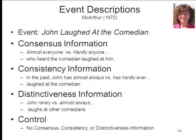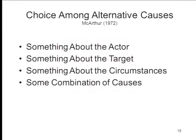This lecture is based on a doctoral dissertation by Leslie MacArthur, now Leslie Zebrowitz, who was the first to take Kelley's covariation calculus and actually test it empirically. Starting with the event 'John laughed at the comedian,' she varied consensus, consistency, and distinctiveness information across multiple trials in a questionnaire with scenarios. For example, to vary consensus: 'Almost everyone who heard the comedian laughed at him' (high consensus) versus 'Hardly anyone who heard the comedian laughed at him' (low consensus).